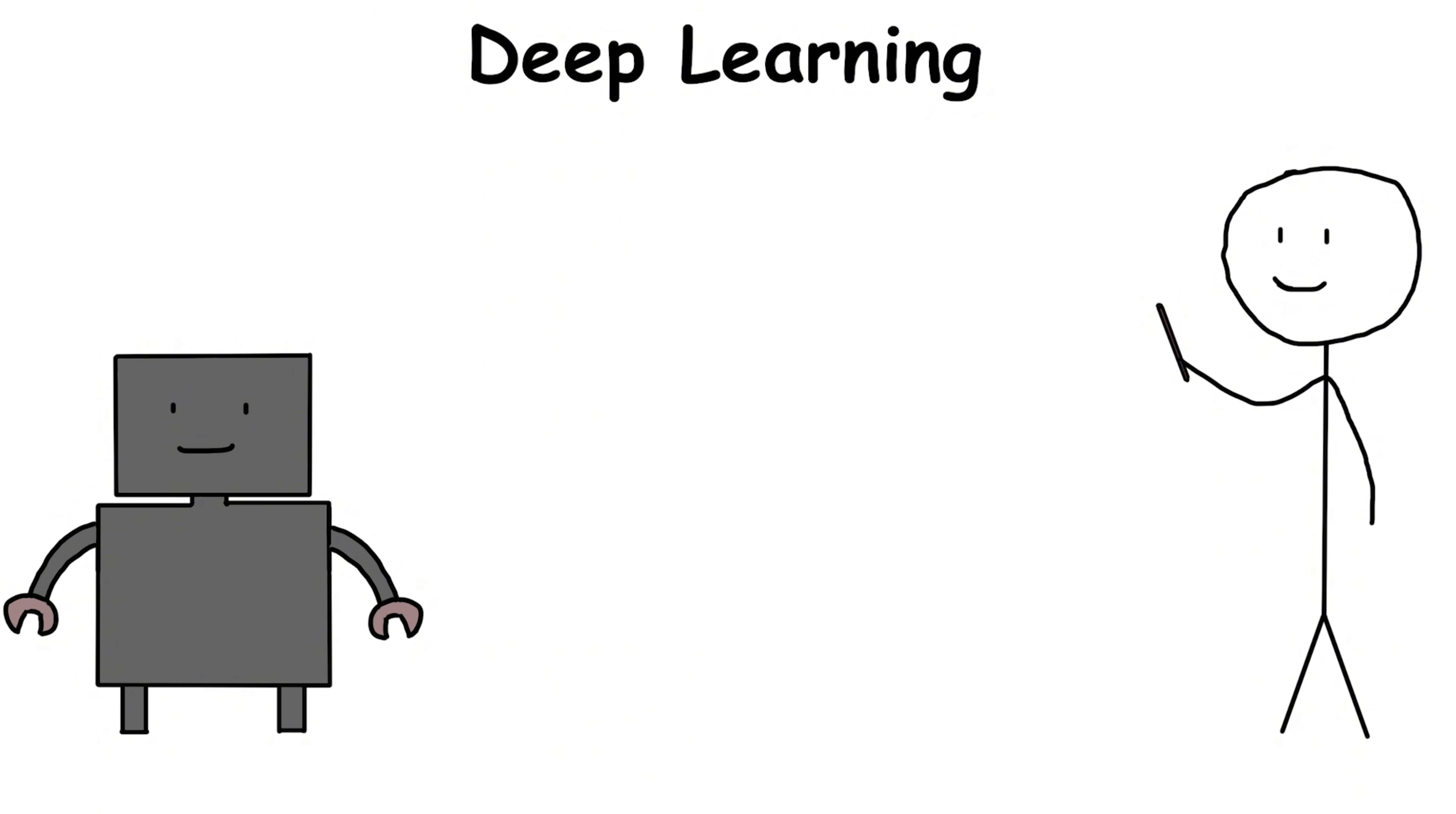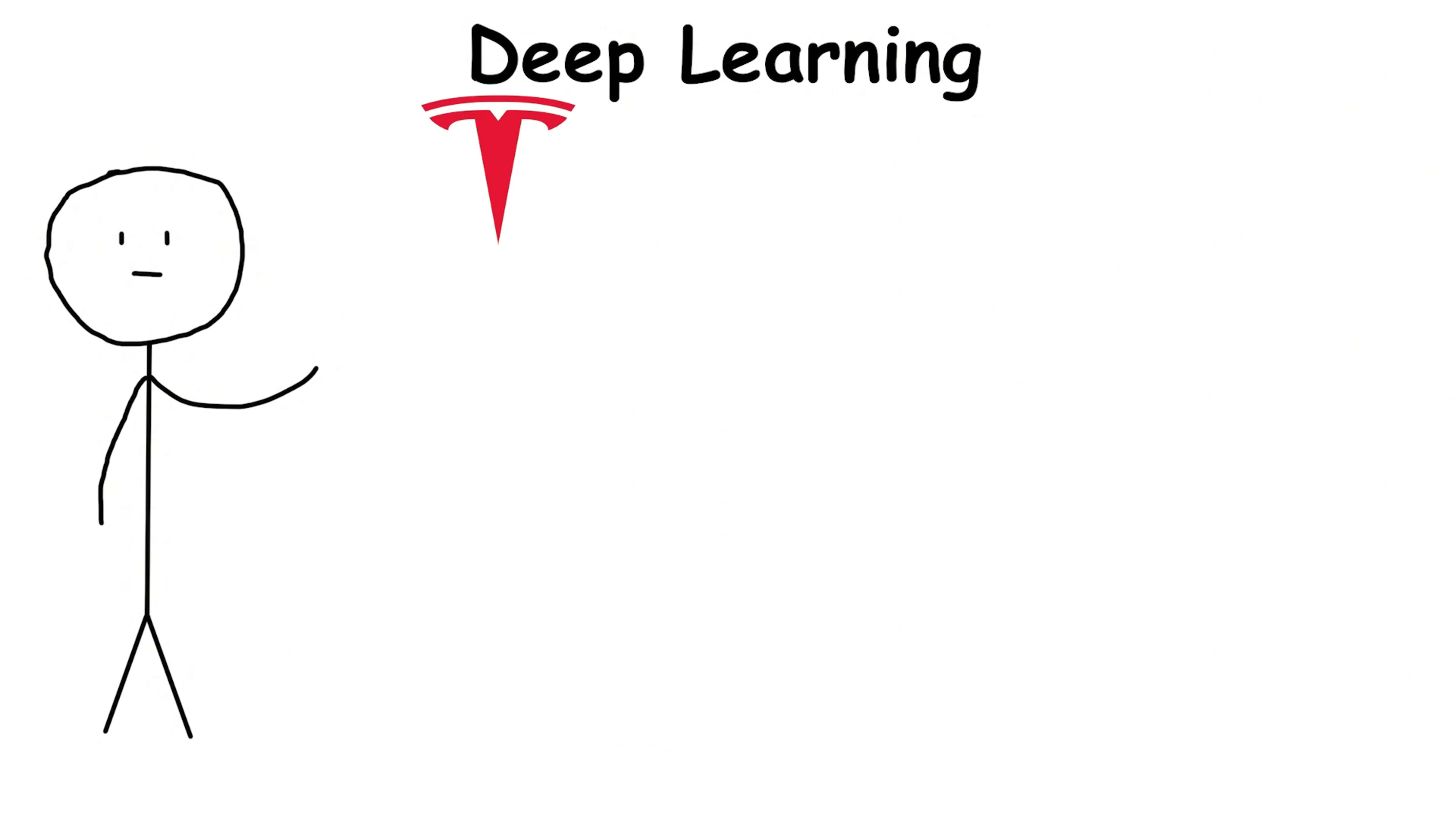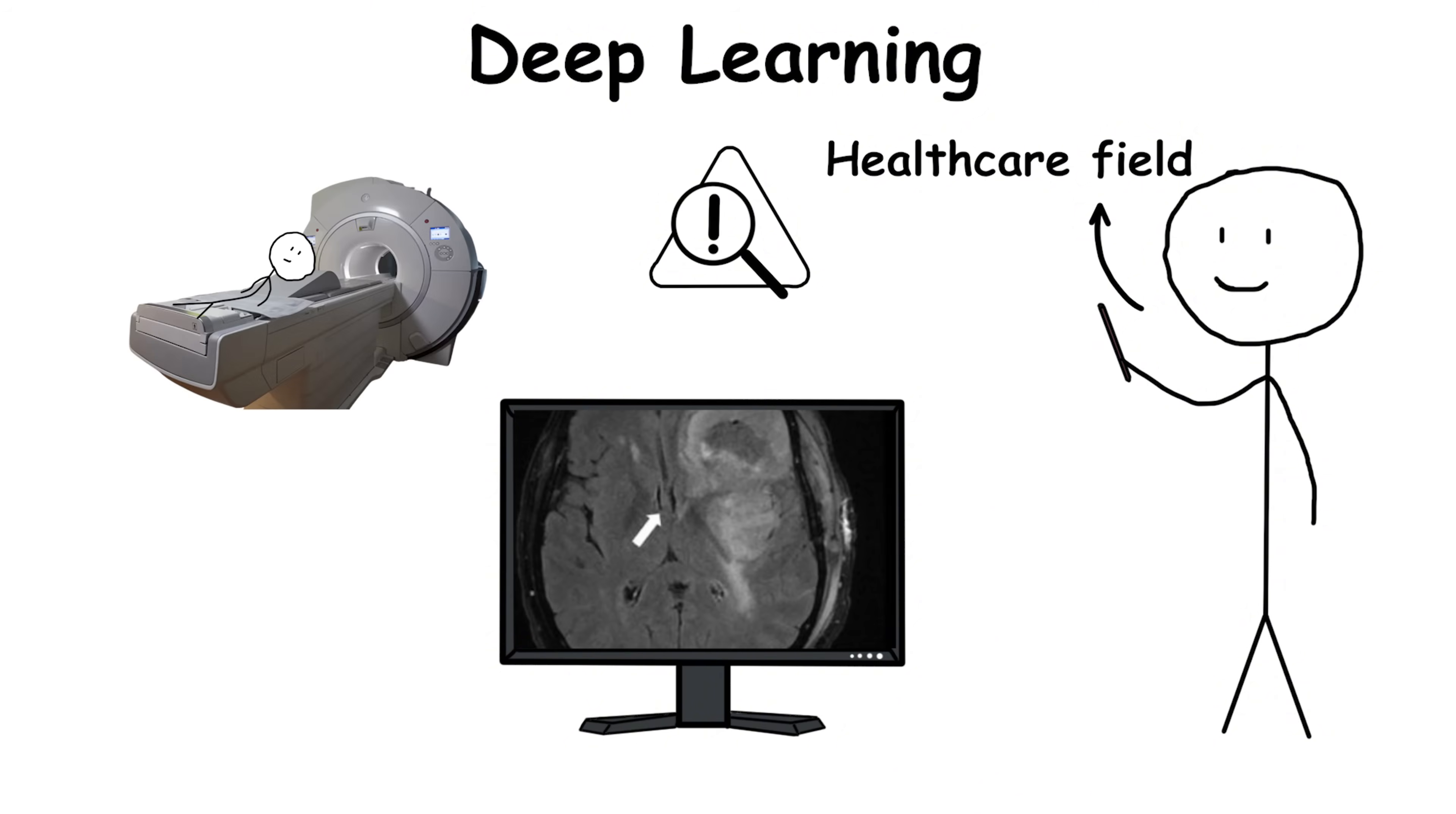Deep Learning uses multilayered neural networks to learn patterns so complex that traditional algorithms can't handle them. It's how your phone's Face ID recognizes you in low light, how Netflix suggests shows you actually like, and how Tesla's autopilot reads lanes and traffic signs in real time. In medicine, Deep Learning powers AI systems that detect early-stage cancers from MRI scans, spotting subtle anomalies that even trained eyes might miss.